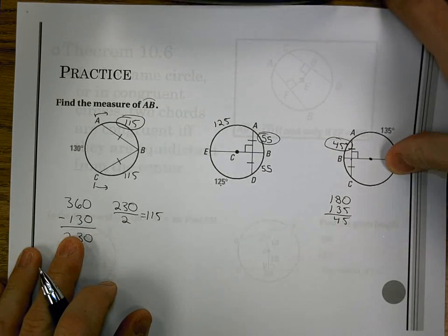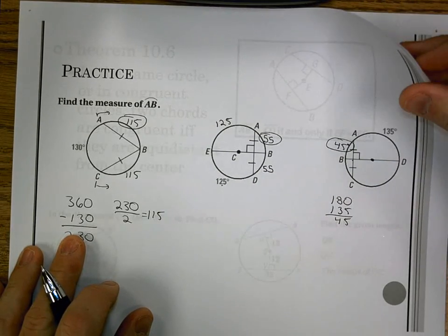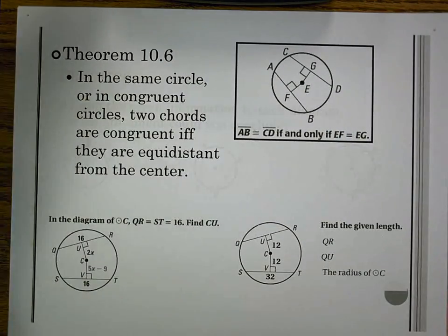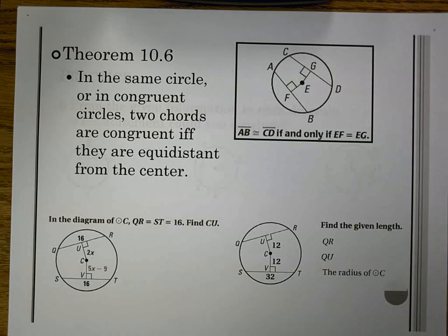Our next theorem, theorem 10.6, I think this is our last one here. It says in the same circle or congruent circle, so again most of the time same circle, two chords are congruent if and only if they're equidistant from the center.